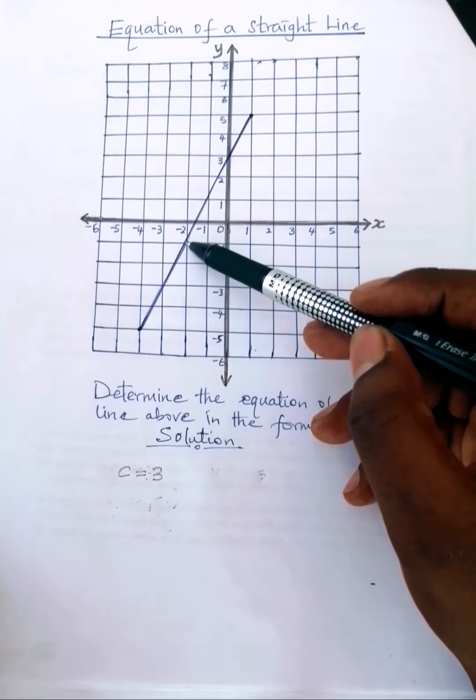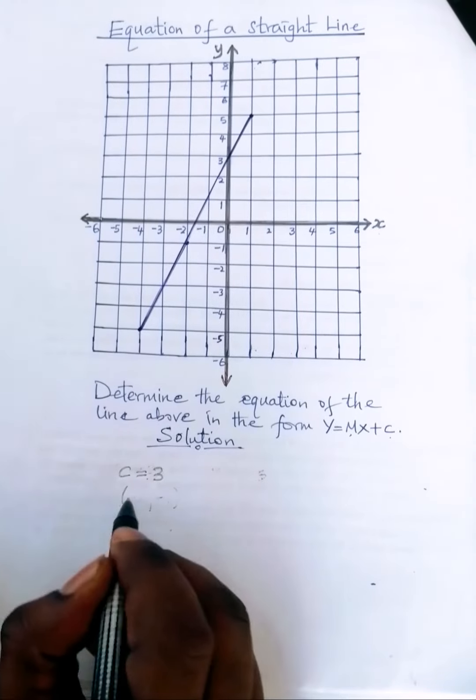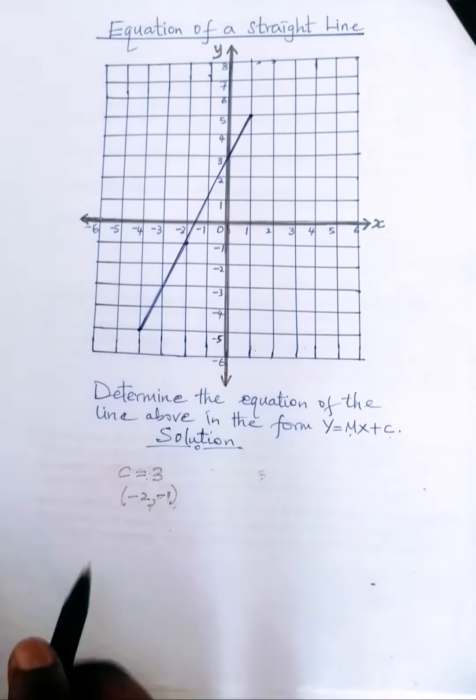And here we have this point here. We have minus 2, minus 1. That is one of the points.